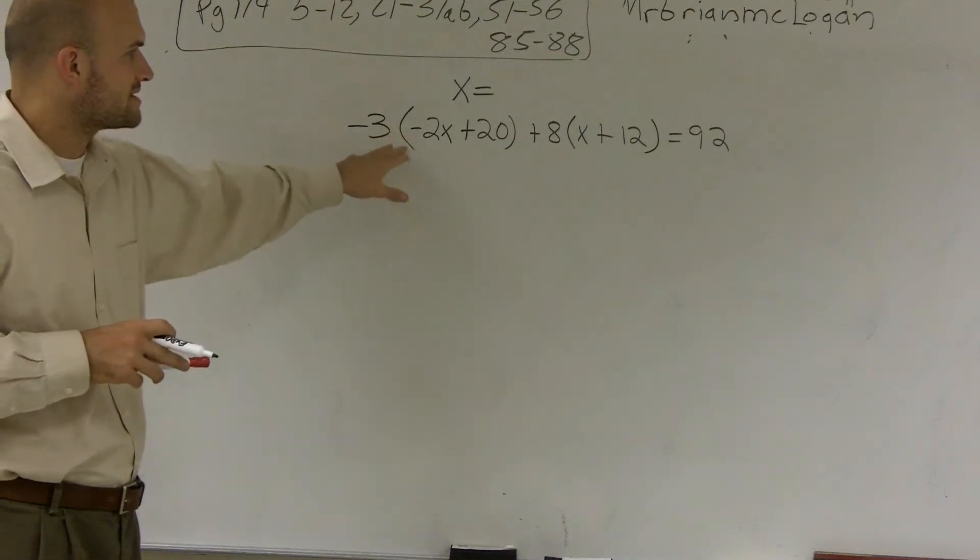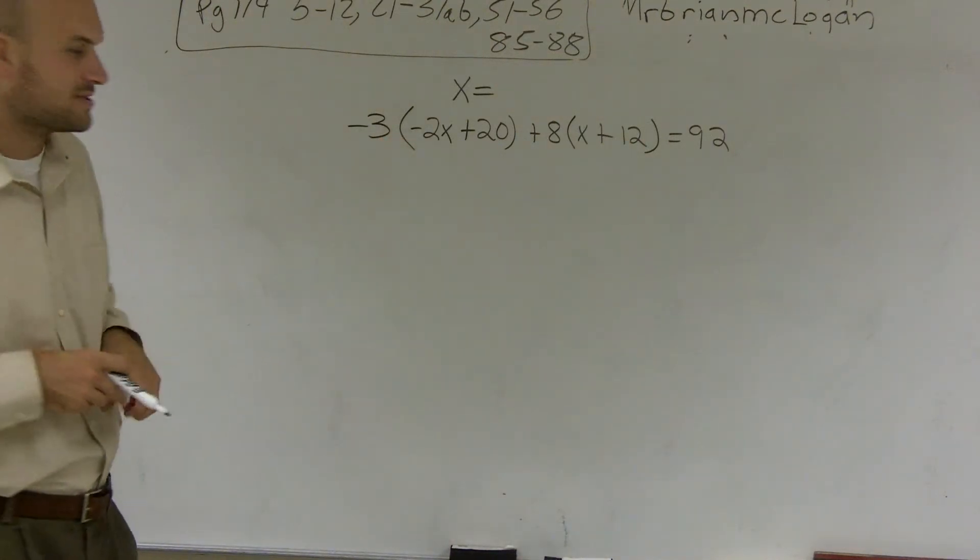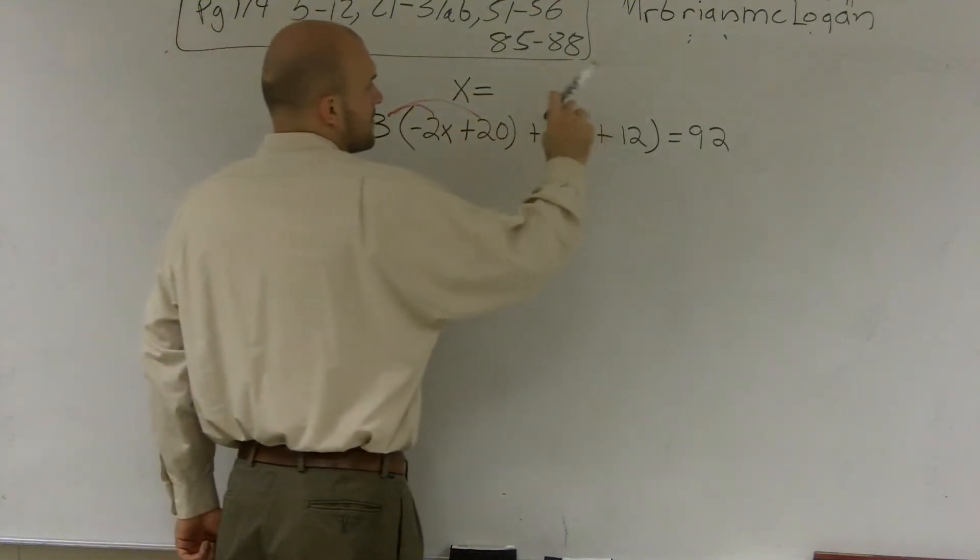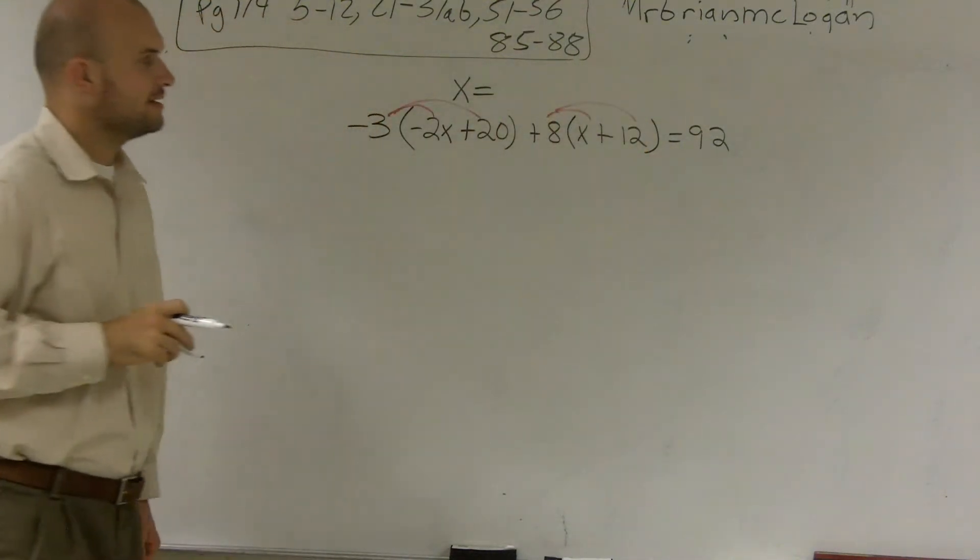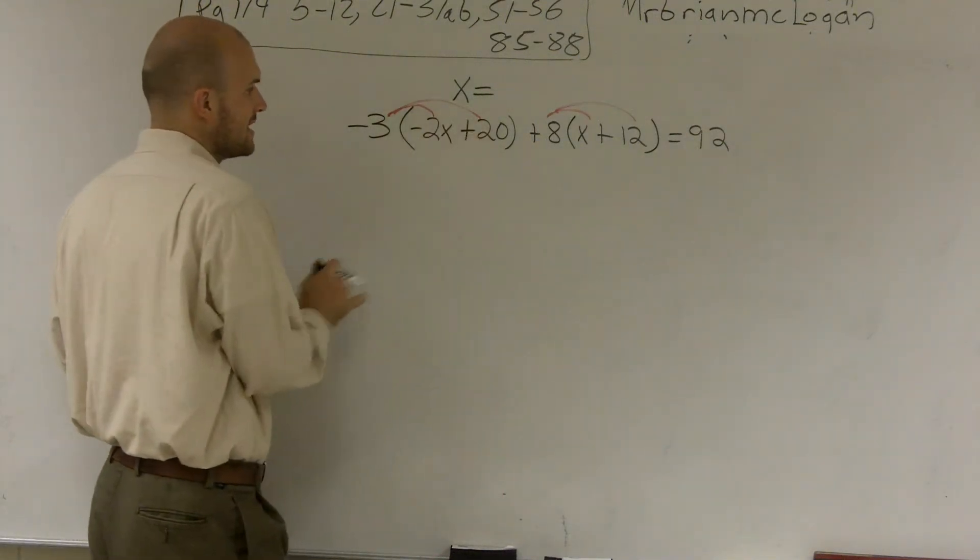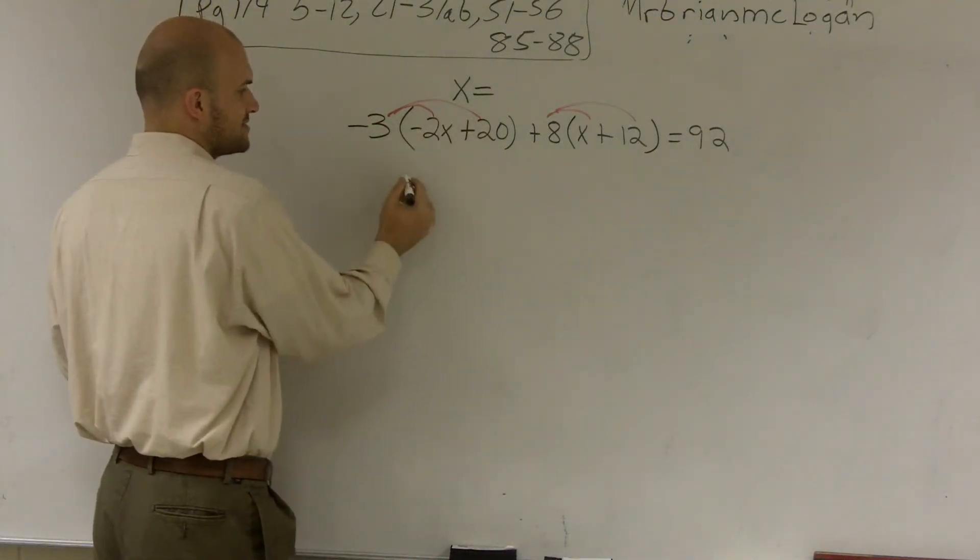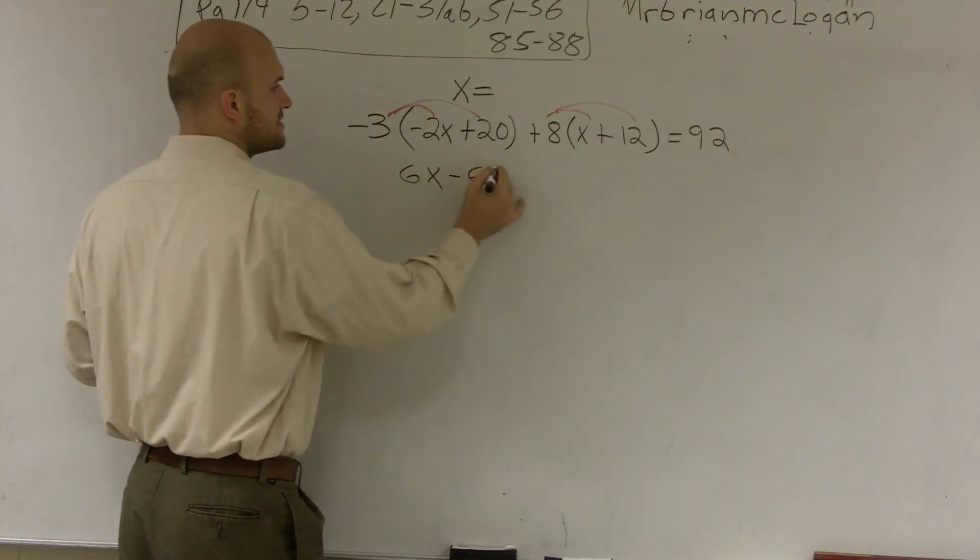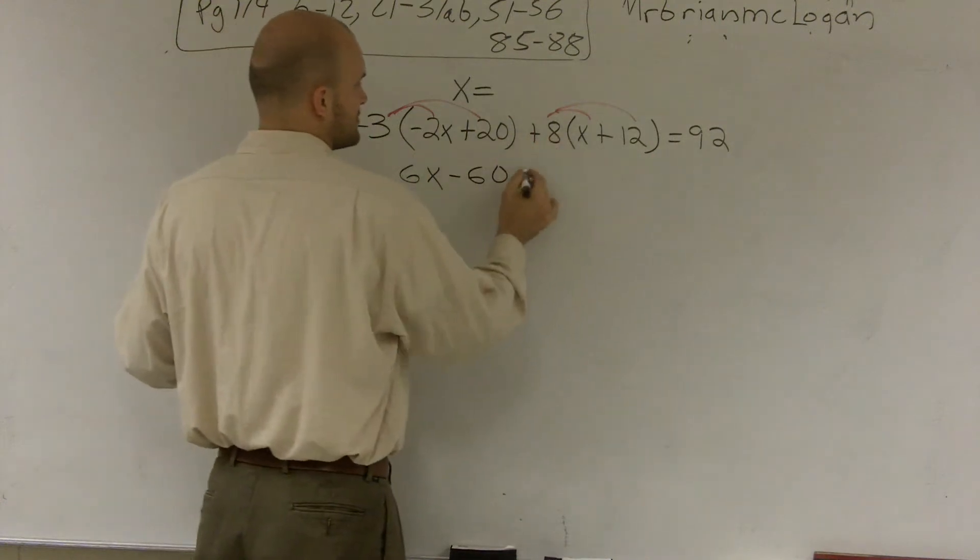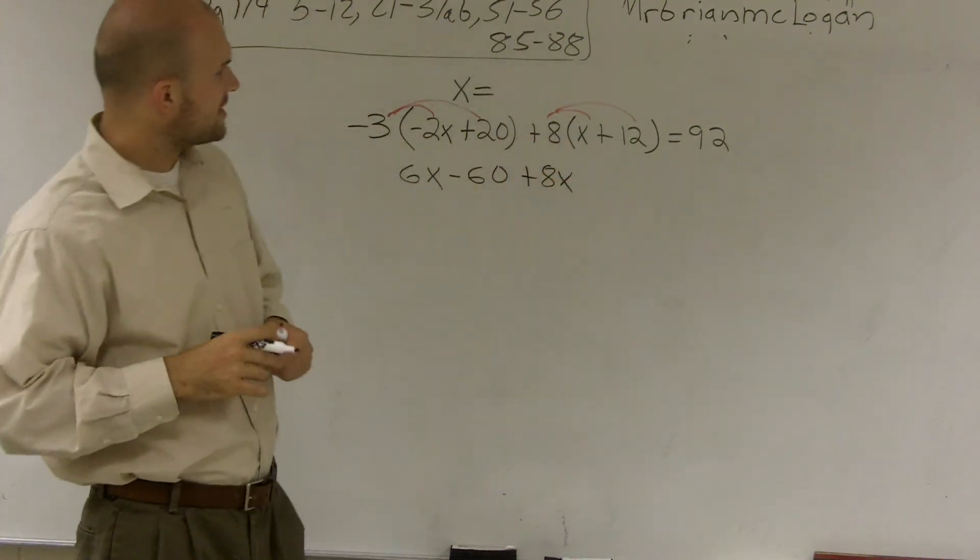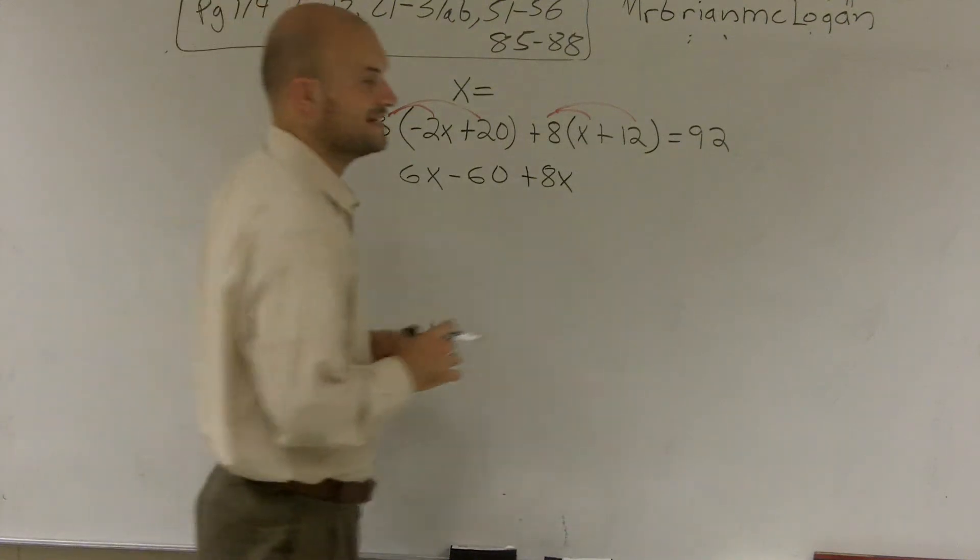Well, before we can even factor out any common terms or look at anything, what I notice is I have parentheses and a number outside multiplying. So I'm going to have to use my distributive property first to multiply every number outside parentheses to every single term inside. So I have negative 3 times negative 2x gives me positive 6x. Negative 3 times 20 gives me negative 60. 8 times x gives me 8x. 8 times 12 gives me 96.